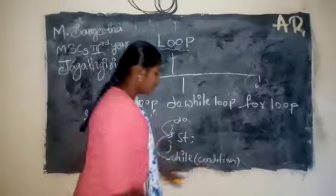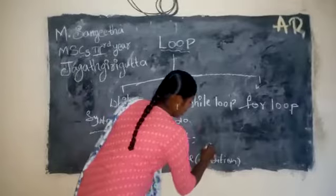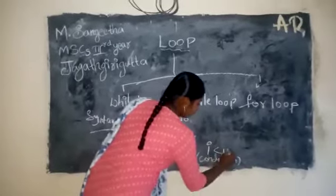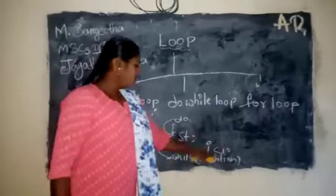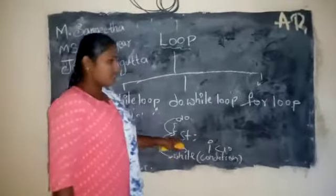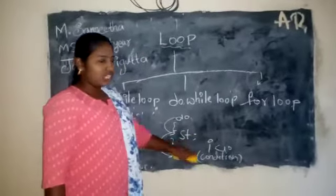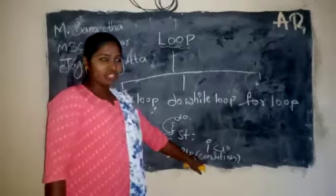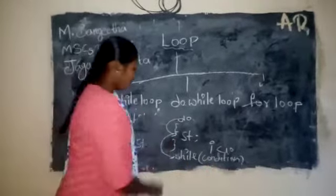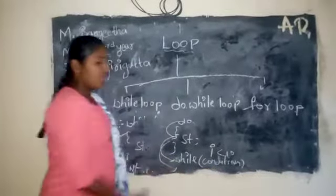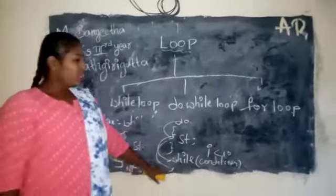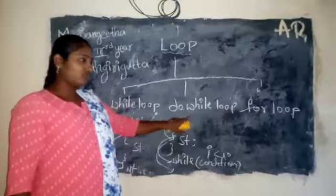After the statement is printed, it goes to the condition. If the condition is true — i less than 10 — we will go to the statement and print it again. If the condition is false, it is terminated — it comes out of the loop. This is called a do-while loop.